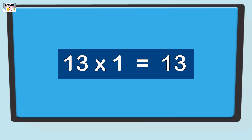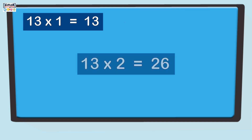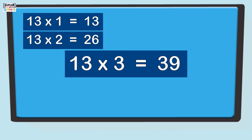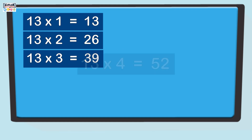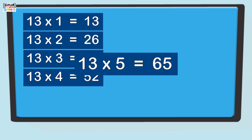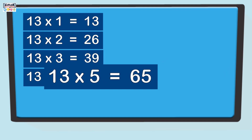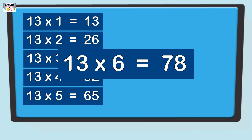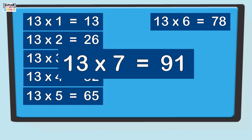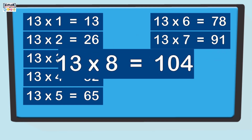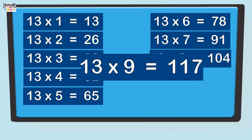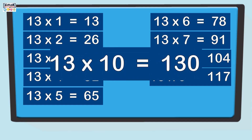13 1s are 13. 13 2s are 26. 13 3s are 39. 13 4s are 52. 13 5s are 65. 13 6s are 78. 13 7s are 91. 13 8s are 104. 13 9s are 117. 13 10s are 130.